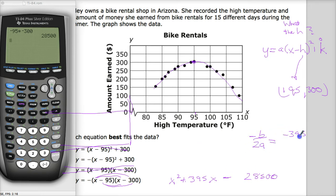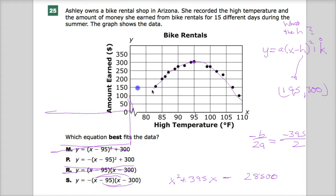So negative 395 divided by 2, negative 395 divided by 2 gives me an x symmetry of negative 197, which would be way over here. So S is not correct.